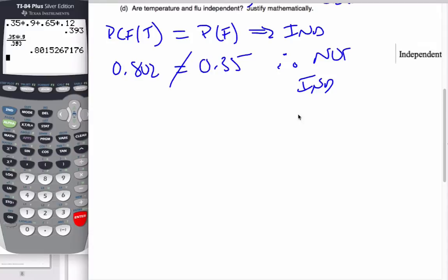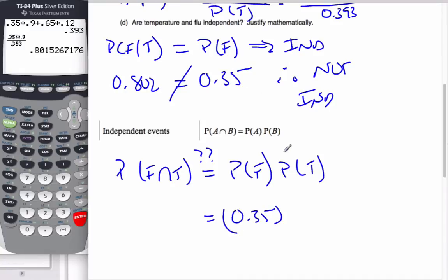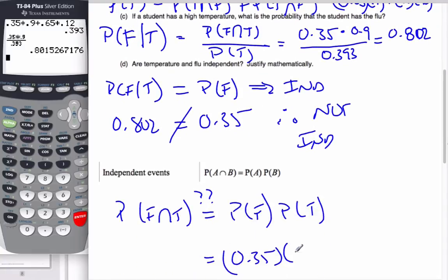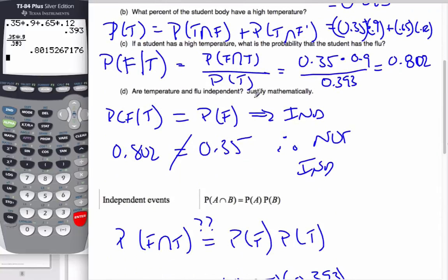Another way that I could think about independence, this is from my formula booklet. If these two things are equal, then they are independent. So if I consider the probability of F and T, does it equal the probability of F times the probability of T? Well, the probability of having a flu is 0.35. The probability of having a temperature is 0.393. And the probability of F and T is this computation here, 0.35 times 0.9.